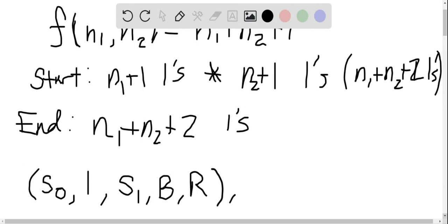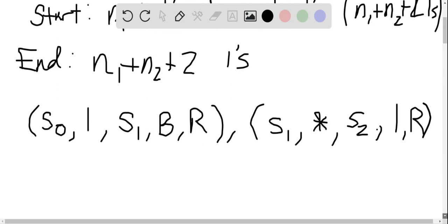At this point it could be that we're in state S1 and we already encounter the asterisk. If this is the case, we'll change the asterisk to a 1 and shift into a new state S2. Then we'll already have our desired string.